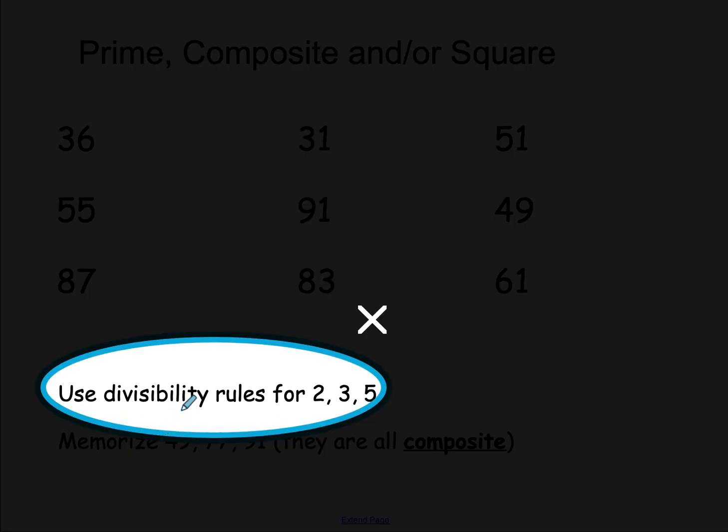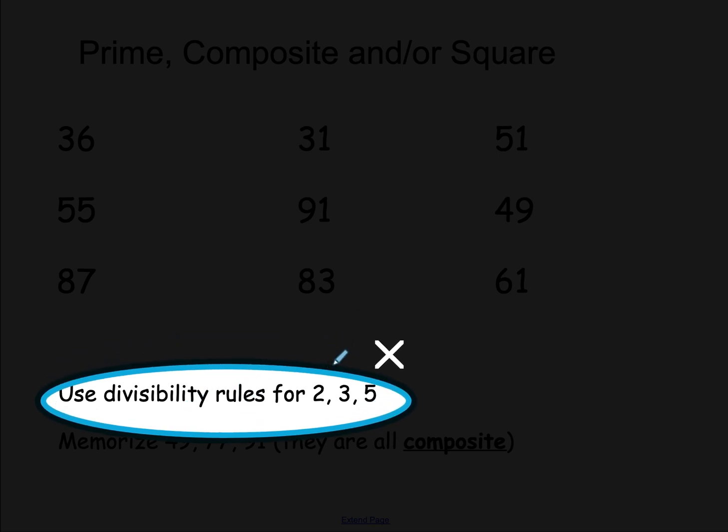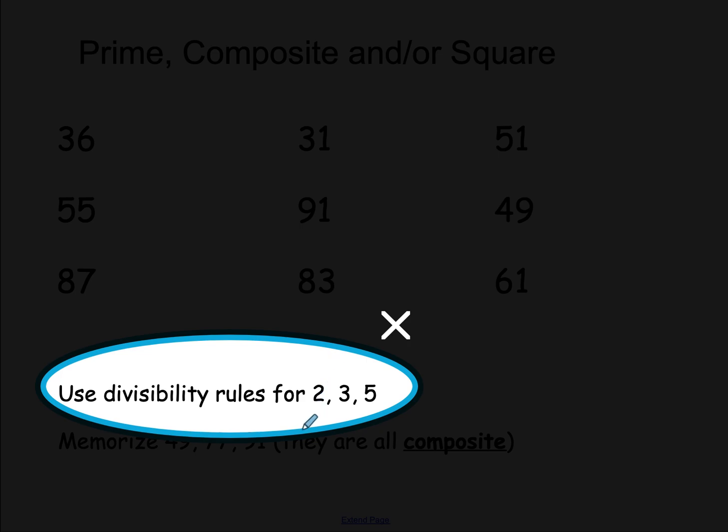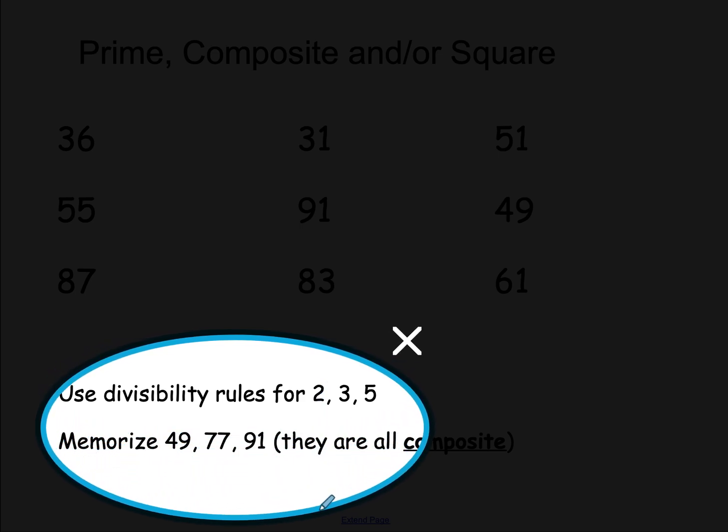If a number is divisible by 2, 3, or 5, then that means it has to be composite. So that's a good way to remember. Now, there are a couple of numbers that, even if they don't show up as being divisible by 2, 3, or 5, they might be composite.